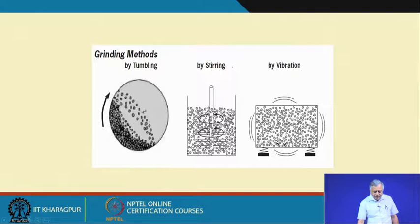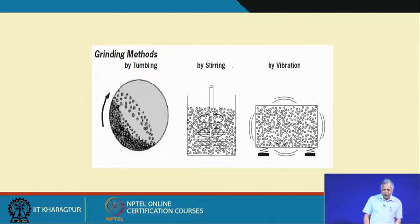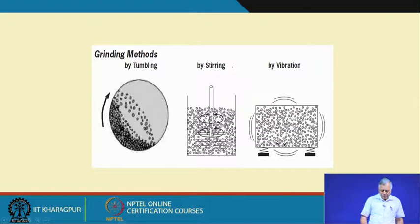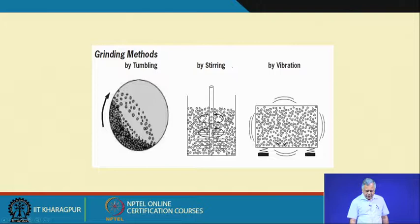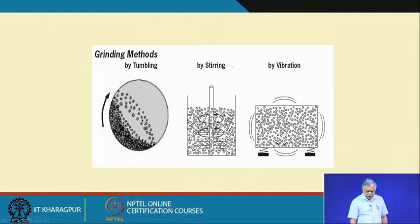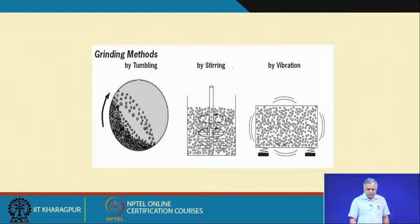For other applications like nano-material and nano-particle generation, there are other mechanisms — by stirring, where you have stirrers made of very hard surfaces that rotate, causing impact of particles against the chamber wall, friction between the stirred material surface and particles, and particle-particle collisions. Vibration is also used these days for particle size reduction. But these two methods are hardly used in mineral processing operations, which essentially require large-scale material throughput per unit time. This discussion will mostly focus on tumbling mills.